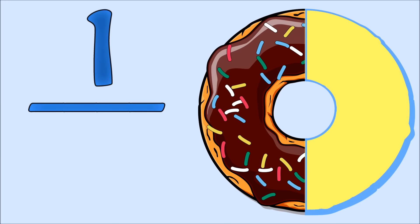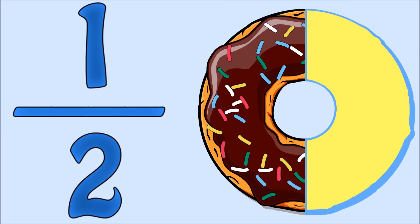That's right, the numerator is one. What is the denominator? Right again, it's two. When the fraction is one over two, we call that one-half.